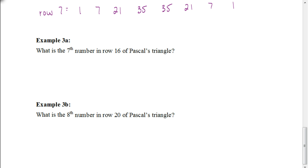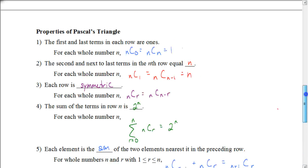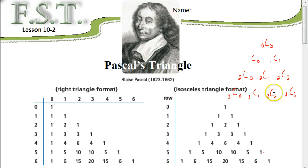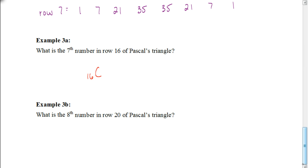We can also use combinations to find the 7th number in row 16. We need to be careful — it's not 16 choose 7. Remember, the term number is always one less than the position: the second number is choose 1, the third number is choose 2, and so on. So the 7th number requires 7 minus 1, which is 6. Therefore we take 16 choose 6, which gives us 8,008.